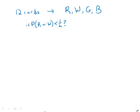We want to know whether the probability of red or white is less than one-half. Notice the probability of red or white is going to equal the probability of red plus the probability of white because these are disjoint conditions, non-overlapping conditions.